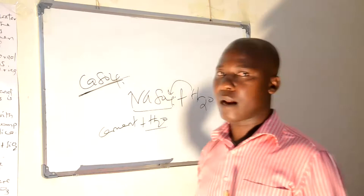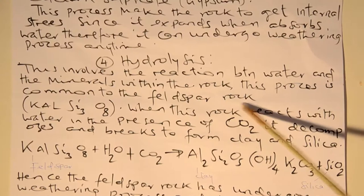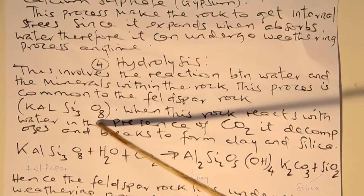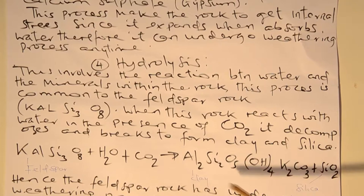Apart from hydration, there is another process of chemical weathering which is called hydrolysis. This involves the reaction between water and the minerals within the rock. This process is common to the feldspar rock. For instance, calcium, aluminum, silicon elements — when this rock reacts with water and hydroxide, it decomposes and breaks into the form of clay and silica. Hence, the feldspar rock has undergone the weathering process to form clay and silica.